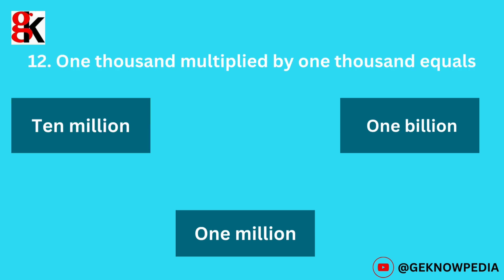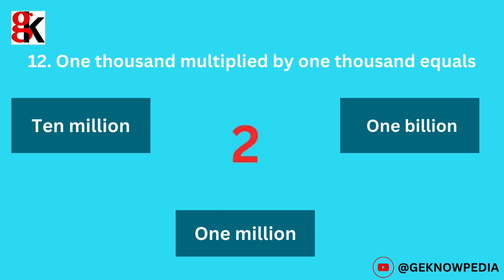Twelfth question. One thousand multiplied by one thousand equals: ten million, one billion, or one million. The correct answer is 1 million.